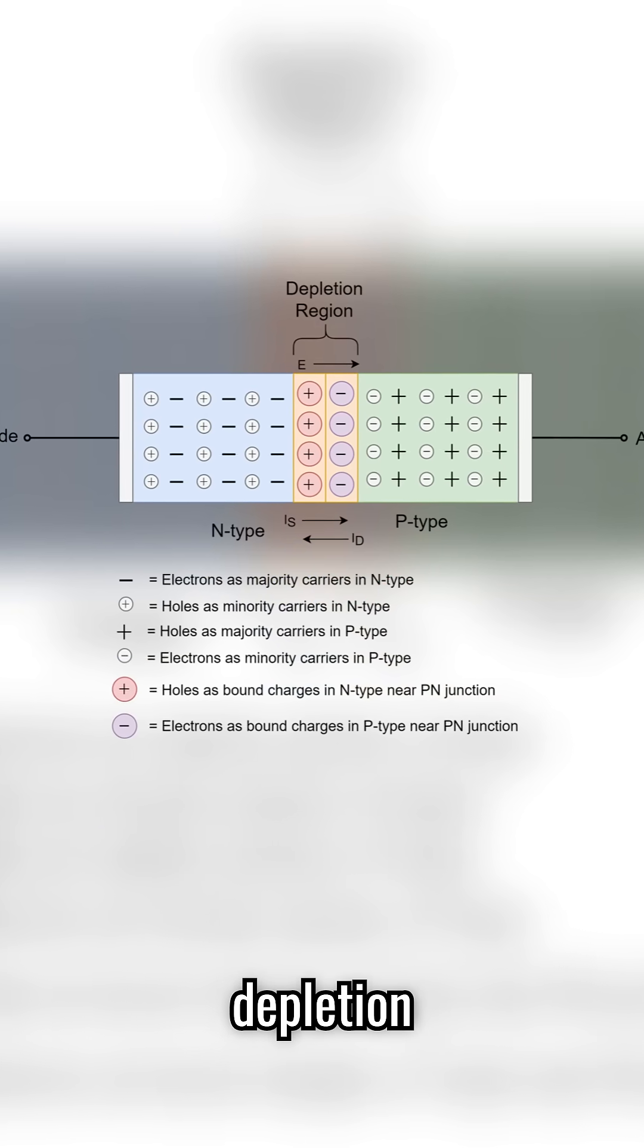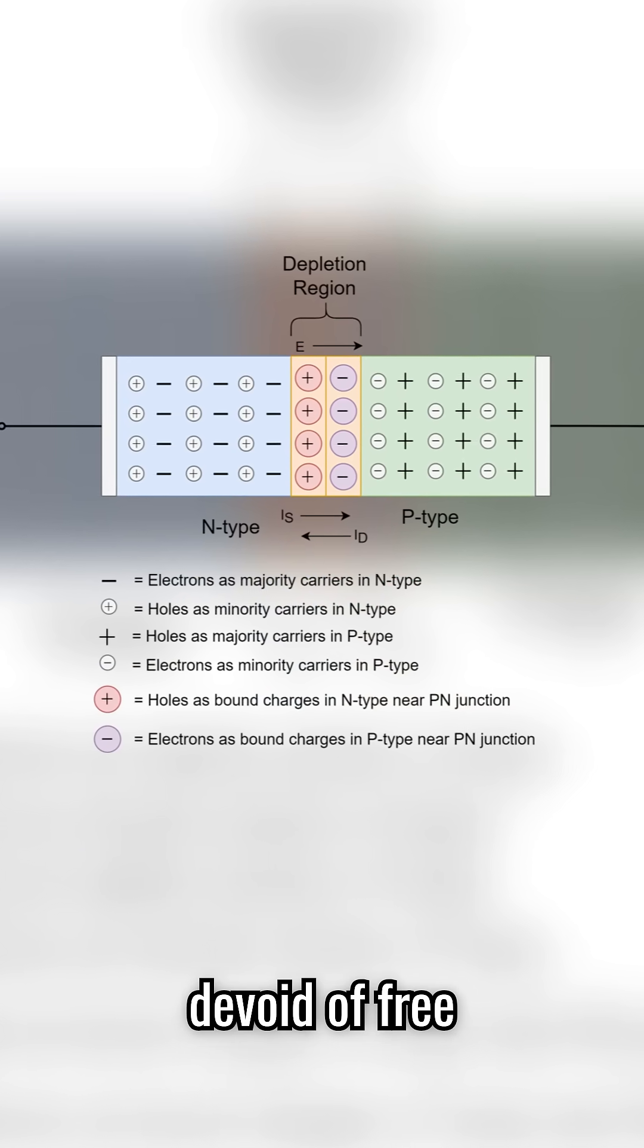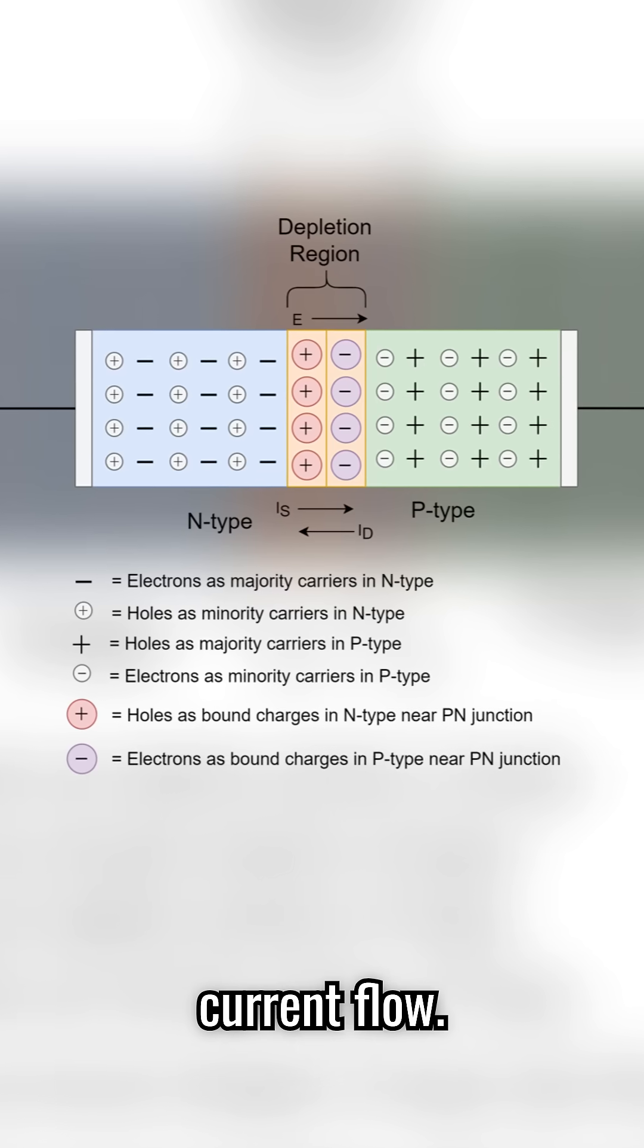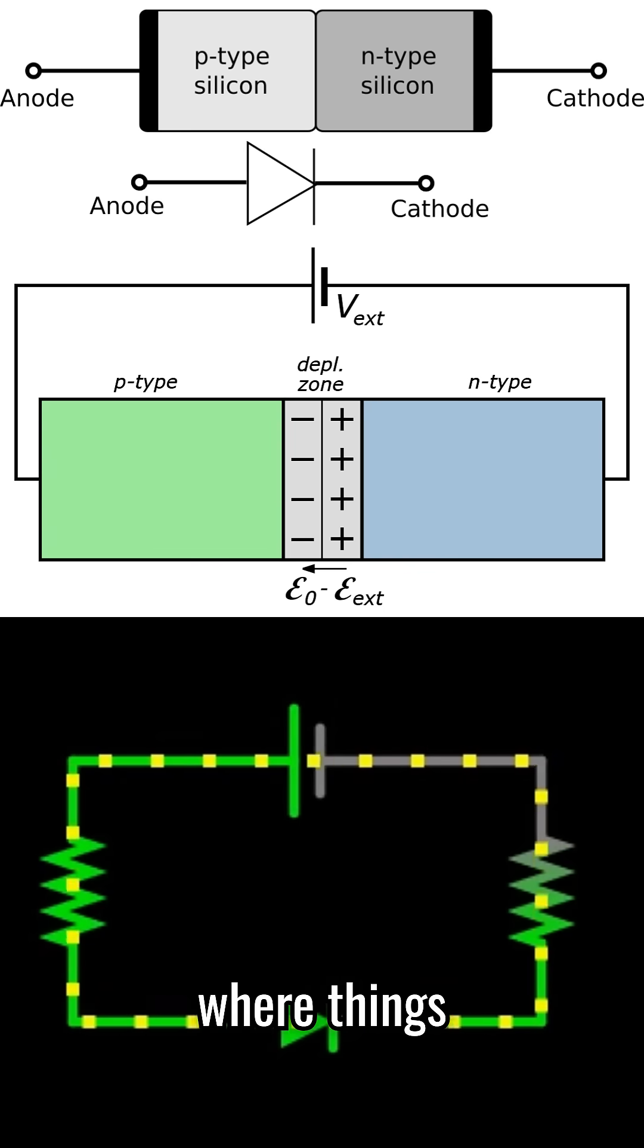This process creates a depletion region, a zone devoid of free charge carriers, which acts as a barrier to current flow. Now, here's where things get interesting.